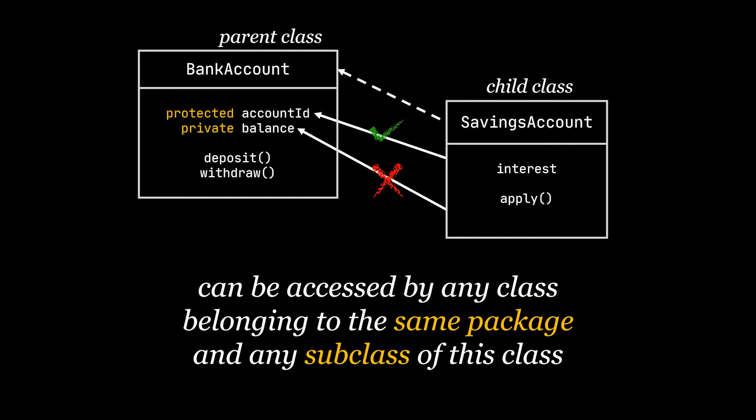In this case, the SavingsAccount will be able to access the accountId property directly without the need for setters and getters. And in order to access the balance, considered as private in our case, the SavingsAccount will have to use getters, setters, or any of the deposit or withdraw methods.